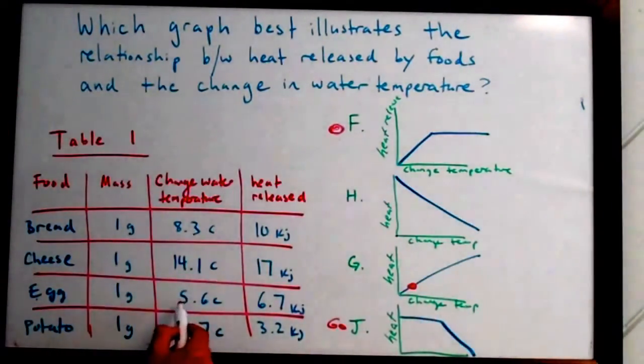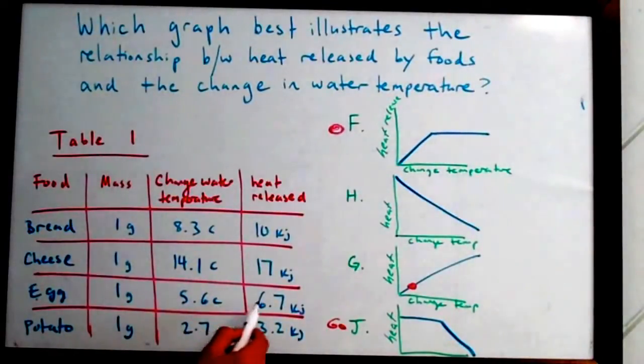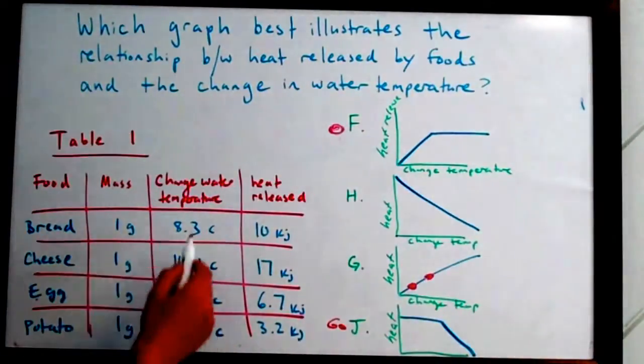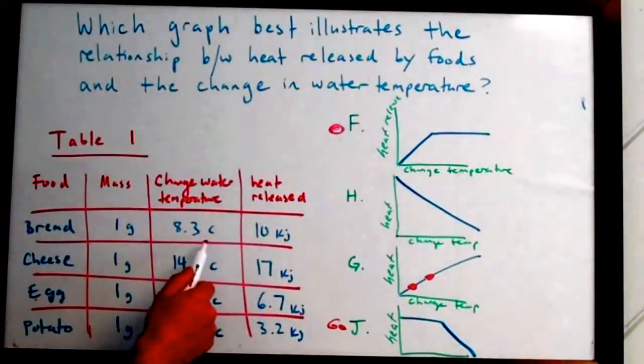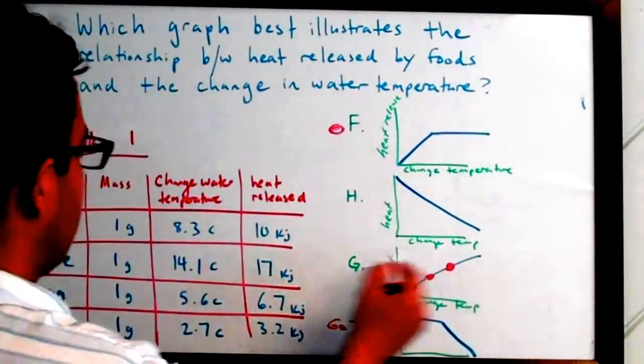And then you go over to the egg, 5.6 degrees Celsius is the change of water temperature, and it renders 6.7 kilojoules. Then you go to the next food source, which is the bread at 8.3 degrees Celsius, and it renders 10 kilojoules heat released.